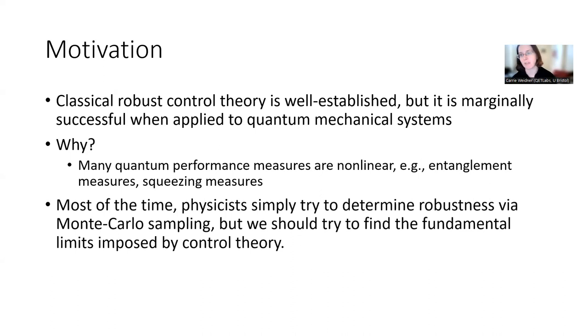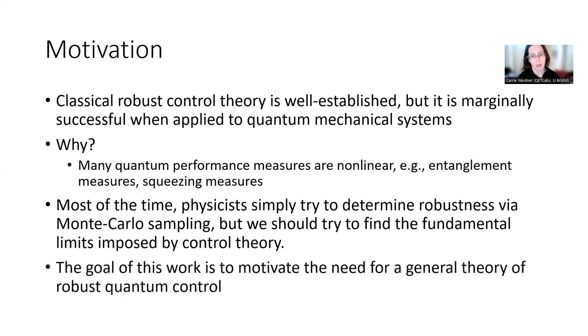And most of the time, physicists really just sort of hit this with the Monte Carlo hammer via Monte Carlo sampling of a control, and they look at the spread and their fidelities or whatnot. And they say, ah, yes, this is or is not robust. But we should really try to find the fundamental limits that are imposed by control theory. And the goal for this work is really not to present any amazing results, but actually quite the opposite, to present some results that are somewhat puzzling, that then motivate the need for a general theory of robust quantum control.